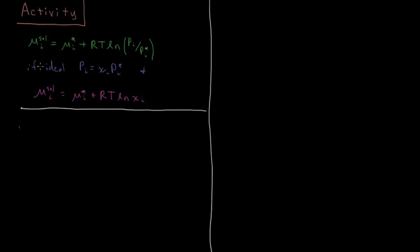For ideal solutions under Raoult's law, the vapor pressure of component i is equal to the mole fraction of that component times the vapor pressure of the pure liquid. Combining these two equations together and substituting in p_i, we get that the chemical potential of component i in an ideal solution equals the chemical potential of pure liquid i plus RT times the natural log of the mole fraction of i.